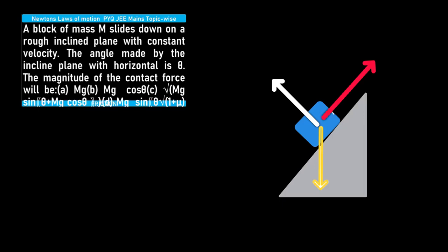A block of mass m slides down a rough inclined plane with constant velocity. The net direction of motion is downwards, and since velocity is constant, acceleration is zero.